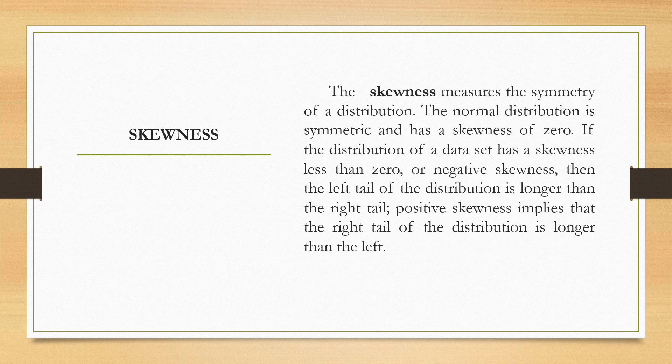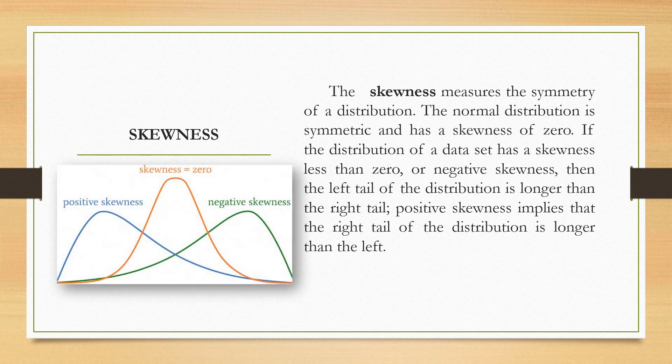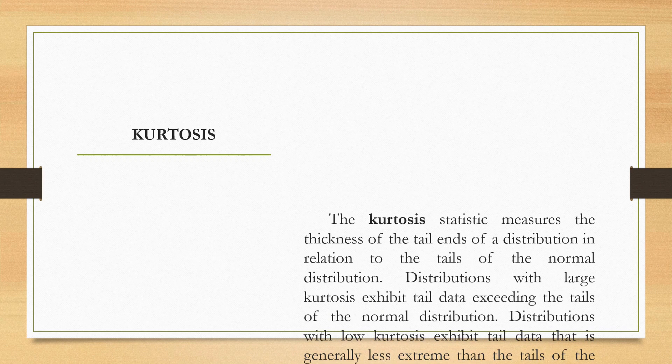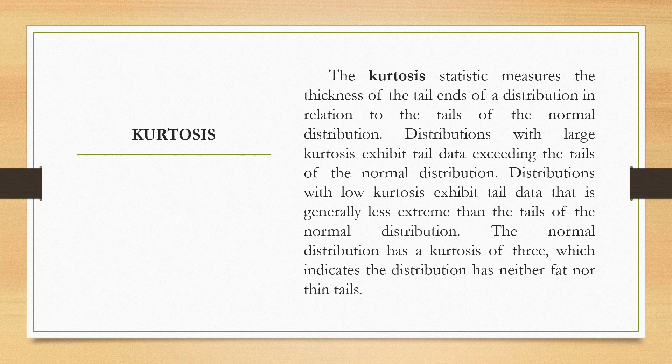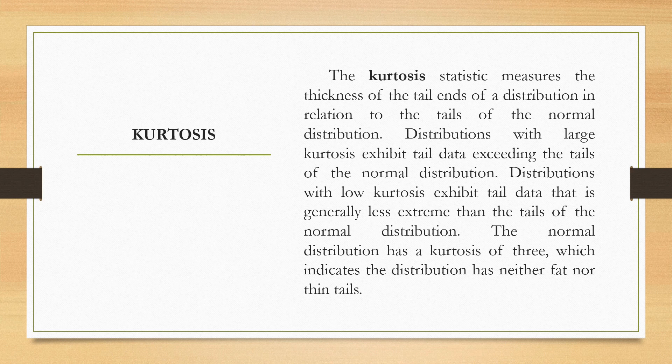If the distribution of a data set has a skewness less than zero or negative skewness, then the left tail of the distribution is longer than the right tail. Positive skewness implies that the right tail of the distribution is longer than the left. While the kurtosis statistic measures the thickness of the tail ends of a distribution in relation to the tails of the normal distribution. Distributions with large kurtosis exhibit tail data exceeding the tails of the normal distribution.